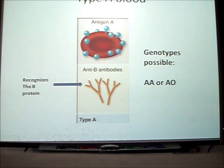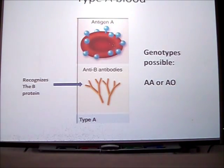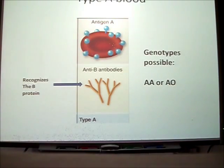If you take a look at blood type A, you'll notice that on the red blood cell you have a specific protein called antigen A. Fill in on your data table under blood type A that you find protein or antigen A on the red blood cell. Take a look at the antibodies. If you have A blood, you have B antibodies. Those B antibodies protect your blood in case B blood is added. You'll notice that the shape at the end of the antibodies is different than the protein that's on the red blood cells.